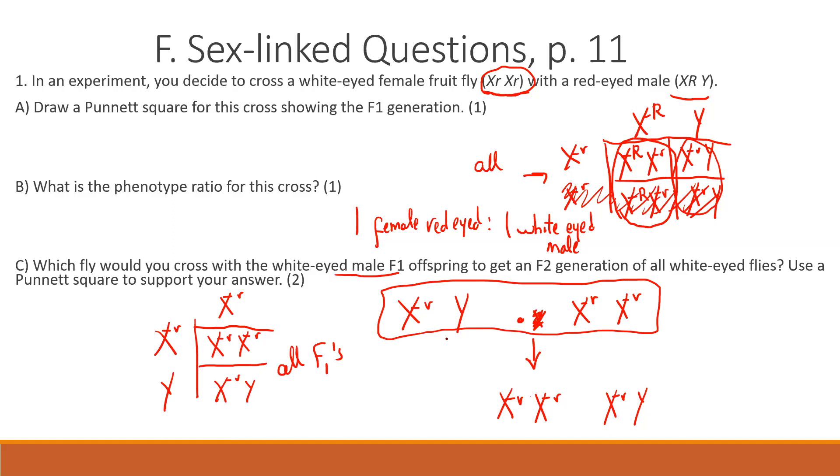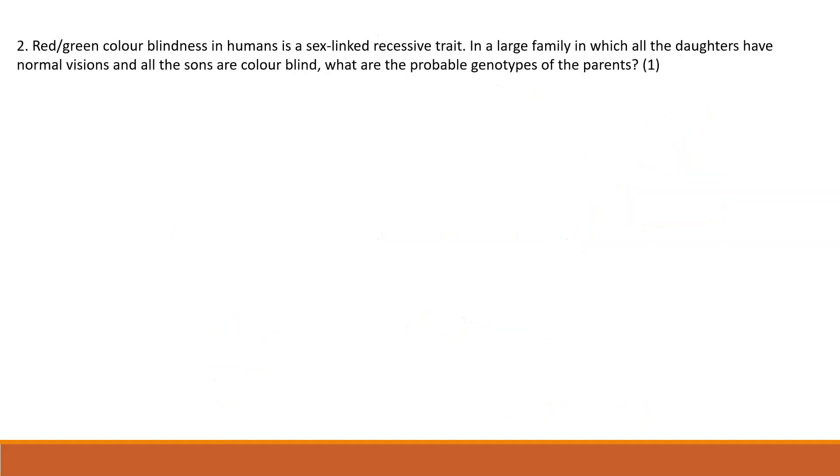Okay, let's take a look at question number two. Red-green color blindness in humans is a sex-linked trait. In a large family in which all the daughters have normal vision and all the sons are colorblind. Okay, so all the daughters have normal vision, we don't know if that's dominant or recessive, but the males are going to be colorblind like that.